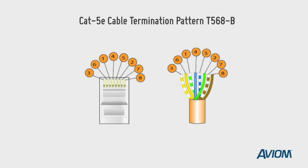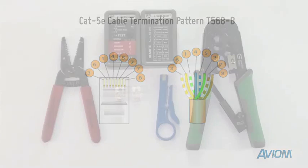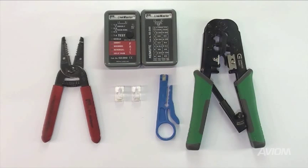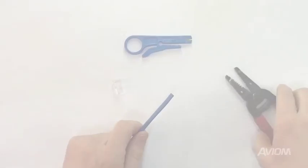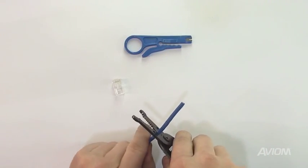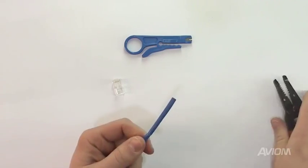For the sake of this video, we will be using pattern B. Let's start with the basic tools required. You will need a wire stripper, an optional outer jacket stripper, a crimp tool and a set of basic testers. For this example, we will be using common tools that can usually be purchased at any home improvement store.